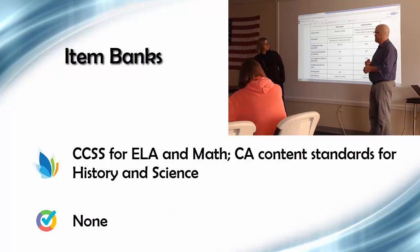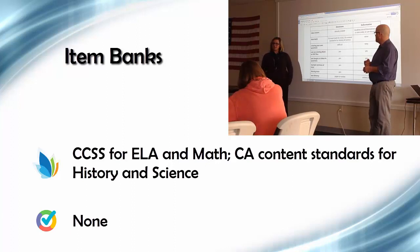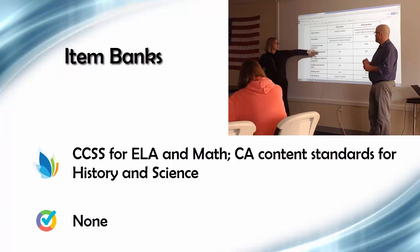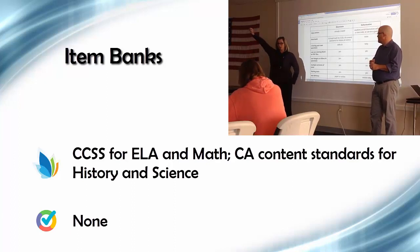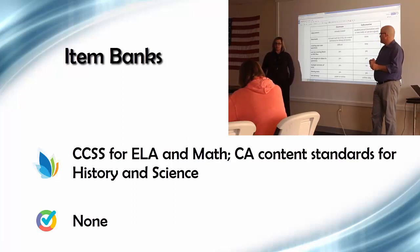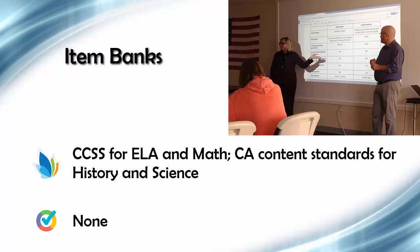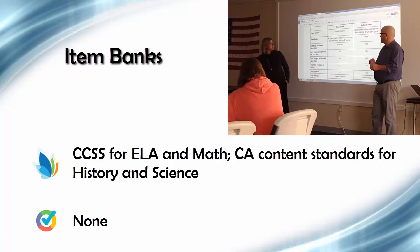A big reason we purchased Illuminate is because it has pre-made, professionally written assessment items for English and math tied to the Common Core and new California standards, and content in history and science tied to California content standards. These are robust items written to the same specifications as the Smarter Balanced assessment — select all that apply, drag and drop, drawing, graphing, highlighting evidence — super robust for ELA and math. History and science items are more DOK 1-2 multiple choice, good for quizzes on specific content.